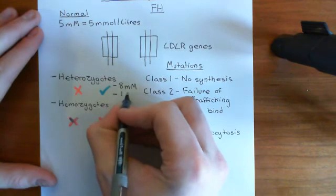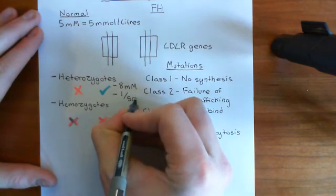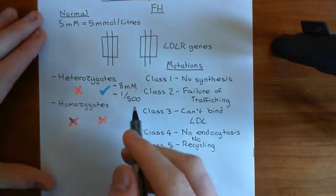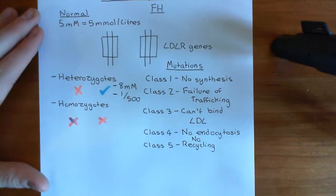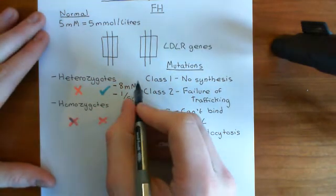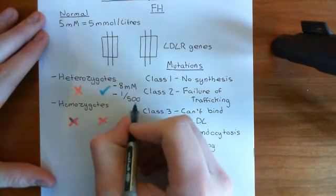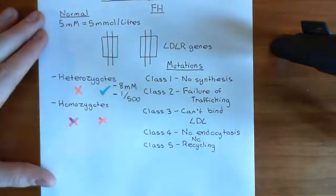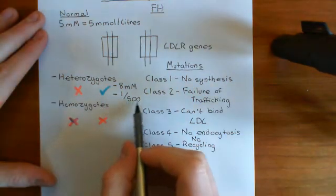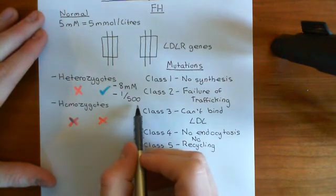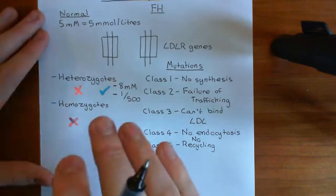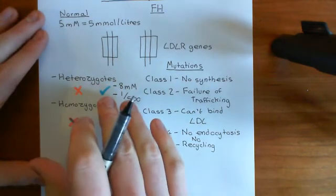Heterozygotes are actually very common — one in 500 people are heterozygotes for familial hypercholesterolemia, and they do have these raised levels of blood cholesterol. Generally they are okay and live for around 40 to 50 years, but then they generally die young because of coronary heart disease, leading to maybe a heart attack or a stroke. So it's not great, but it's survivable basically.